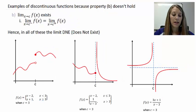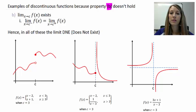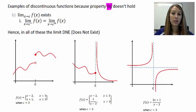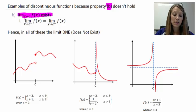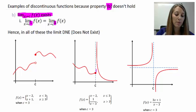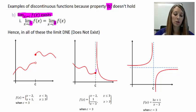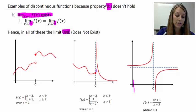Now let's see examples of a graph that is discontinuous because of property B. Property B uses our calculus knowledge of limits — we need to know that the limit itself exists. Most of the time that means our left-hand limit has to match up with our right-hand limit. These examples show us that the graph is not continuous because the limit does not exist.